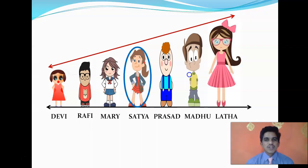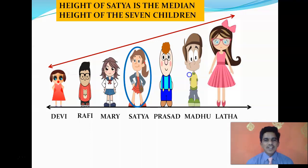The child in the middle is Sathya. If you have to identify the median of these heights, where every child's height is not the same, the height of Sathya is the median height of these seven children. The median divides the data into two parts with equal number of observations.